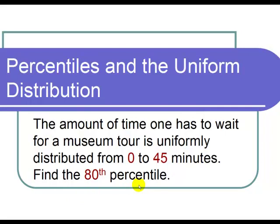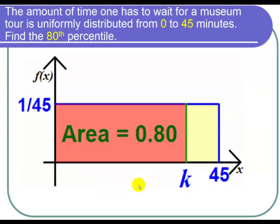I'm going to start out by putting this in a diagram. Since we have a uniform distribution, we get a rectangle. We're going from 0 to 45 on the x-axis.